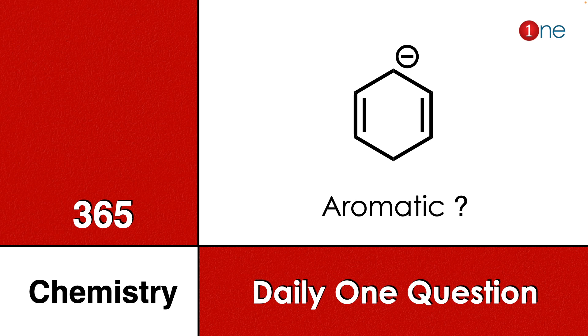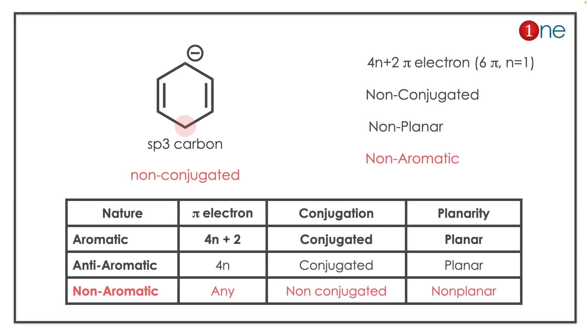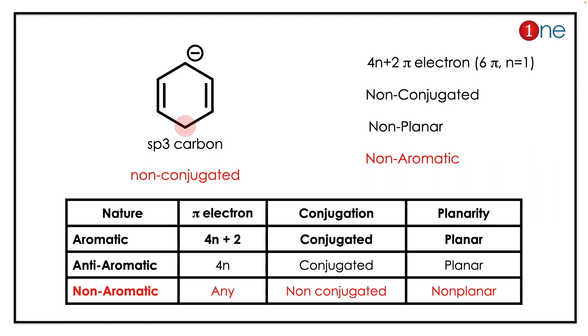Welcome to One Chemistry. This is the 365 Chemistry series, daily one question for you. Here, a six-member cyclic compound is given with triene and an anion. You have to find whether the given compound is aromatic or not.